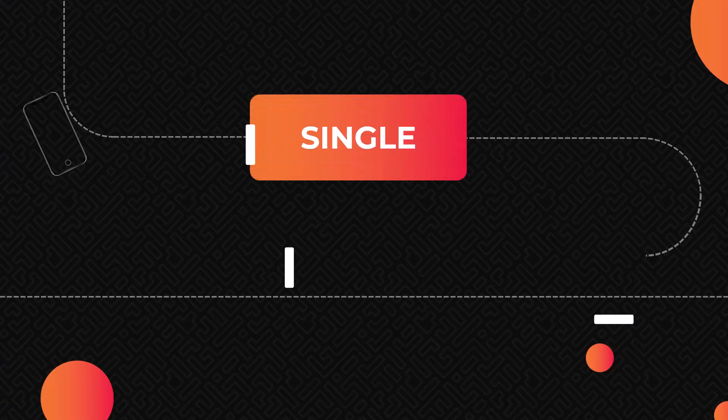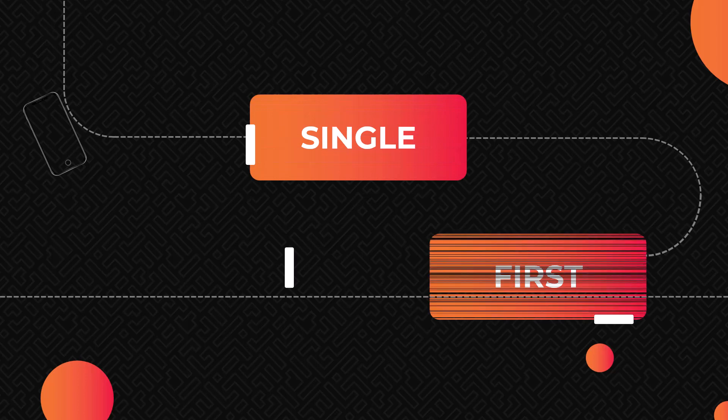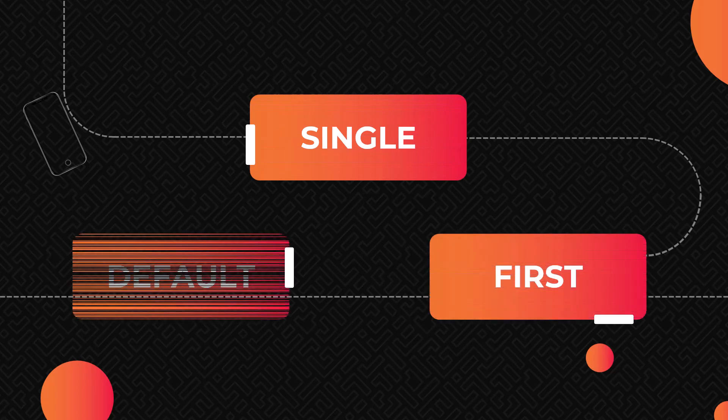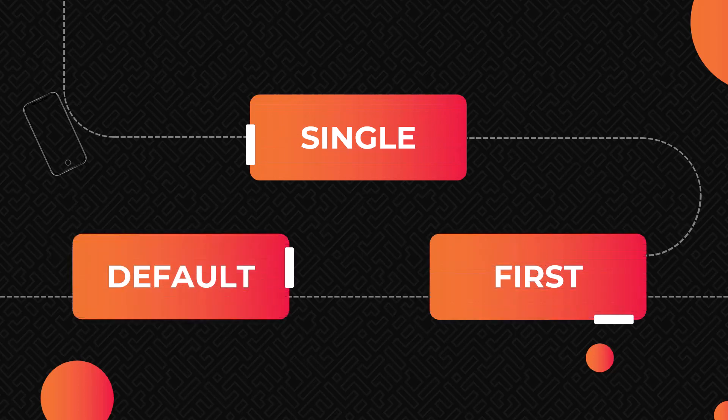Back to the main question — we have Single, First, FirstOrDefault, and SingleOrDefault. These are the methods or operators in LINQ and Entity Framework to retrieve one record, but there are a few differences between them and when you should use each one.